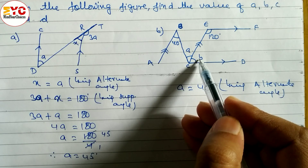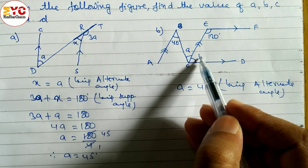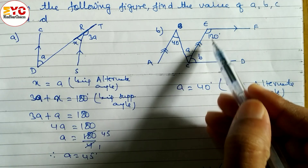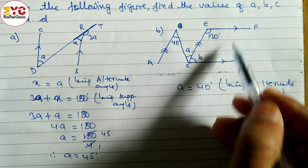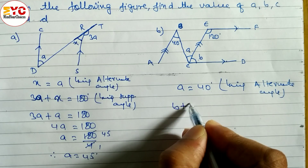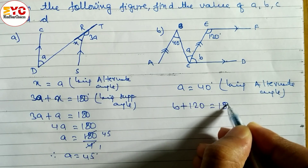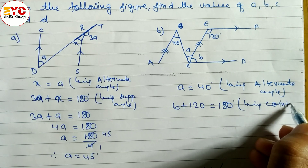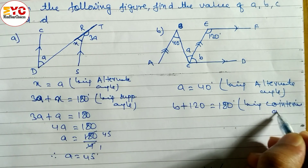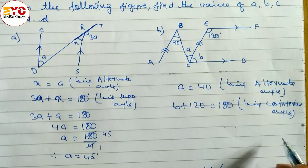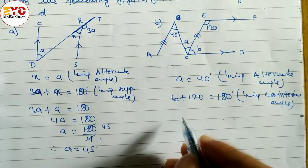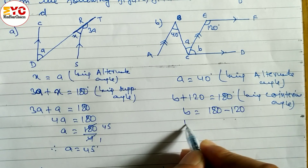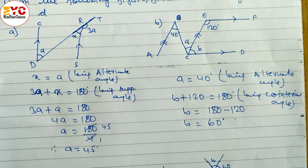Now we have to find out the value of b. We can do like this: b plus 120 is equal to 180 degrees, because both angles are inside of these two parallel lines. So we can write b plus 120 is equal to 180 degrees. Reason: being co-interior angle.